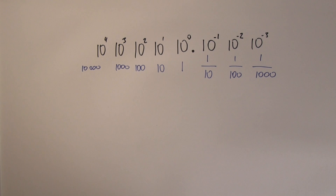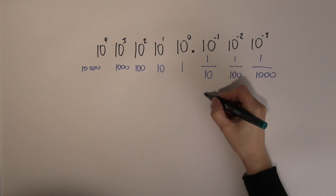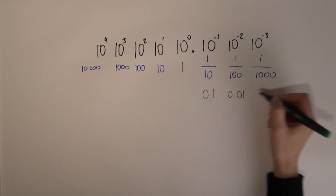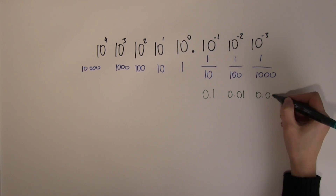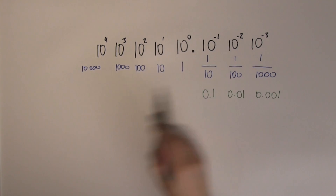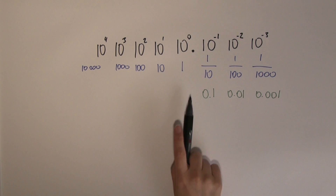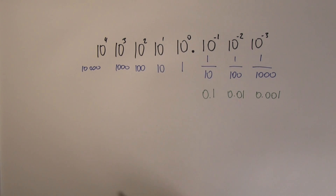It might be more familiar to look at it this way: one over ten is 0.1, one over a hundred is 0.01, and one over a thousand is 0.001. Depending on how you were taught, you may know either the fraction format or the decimal format.